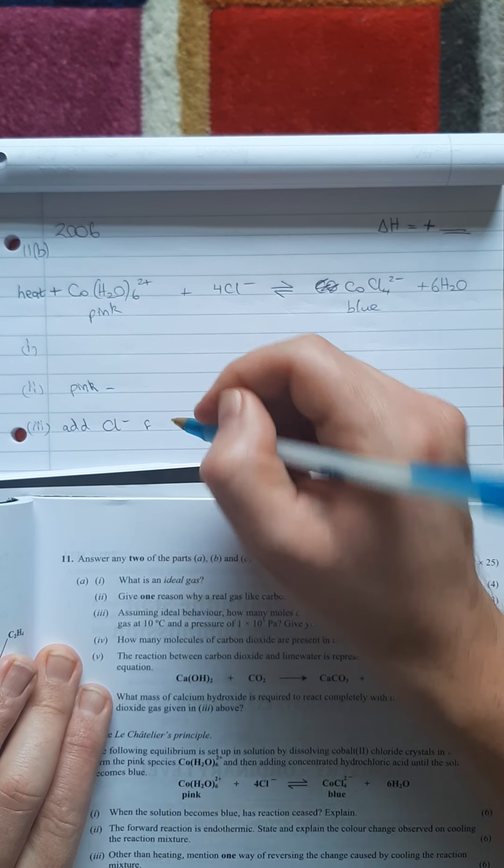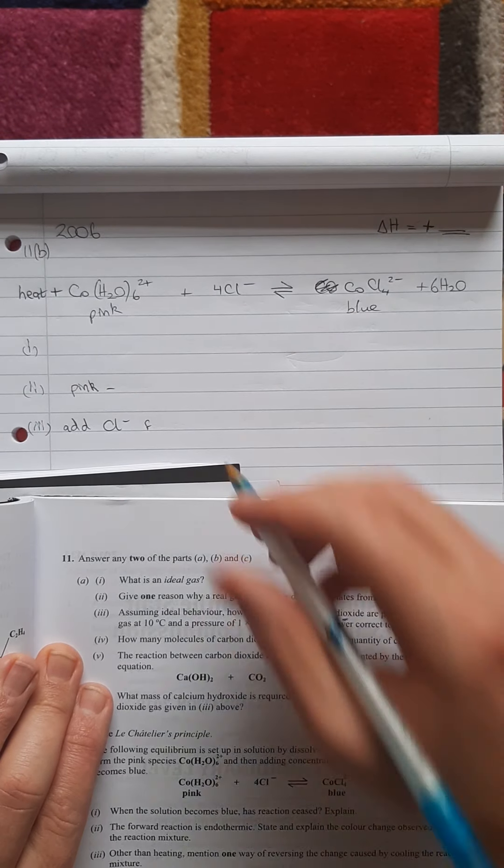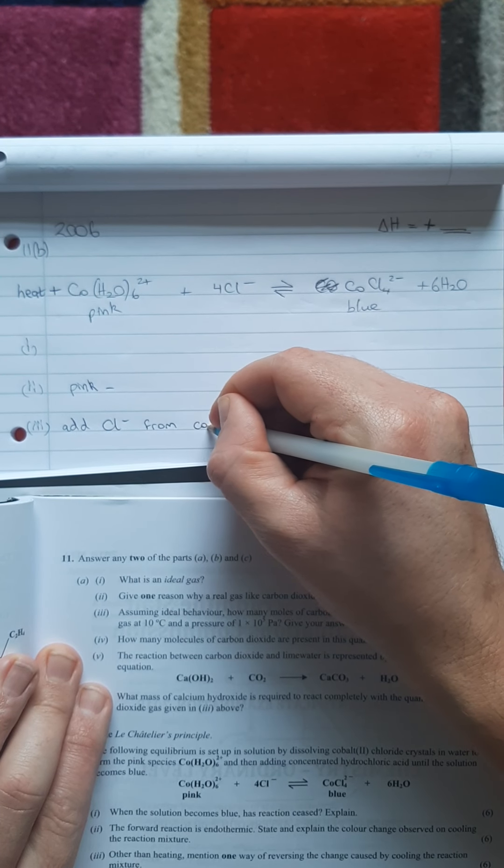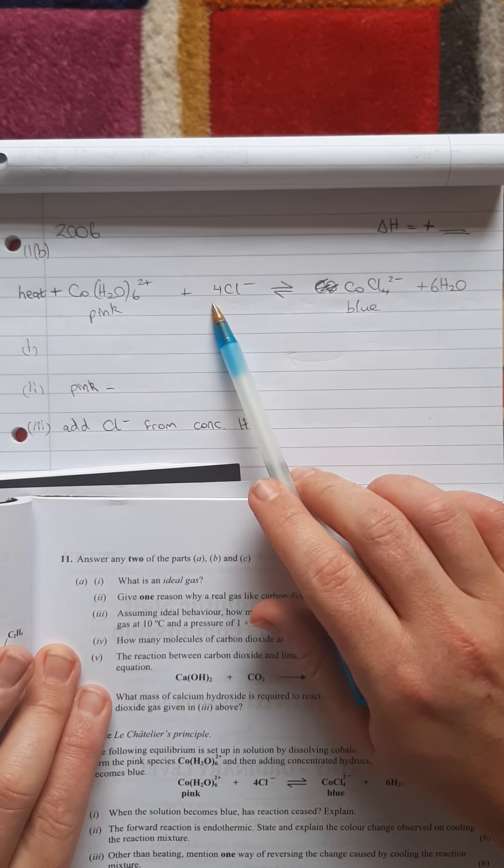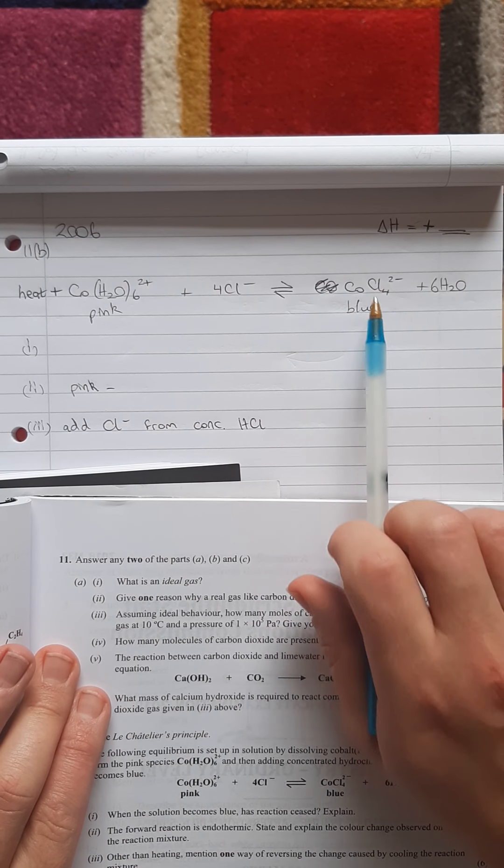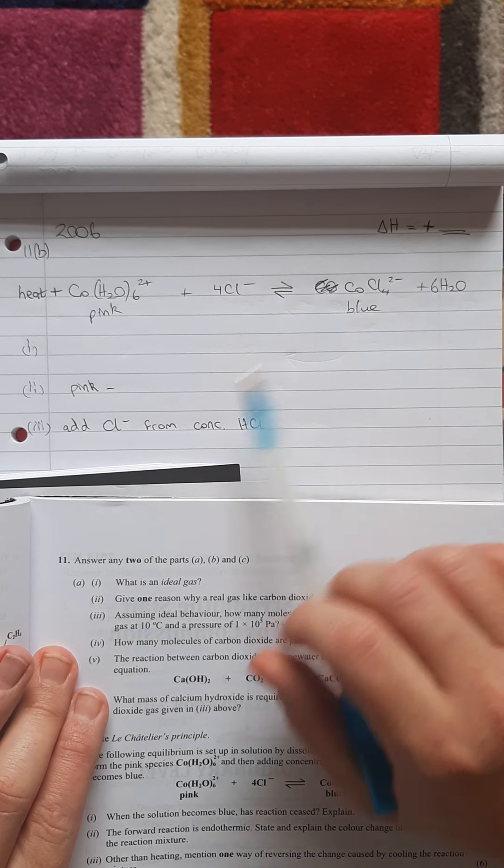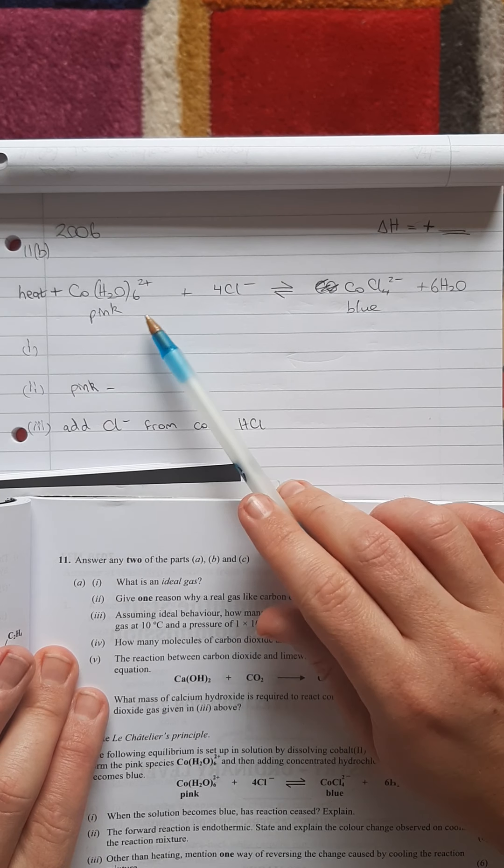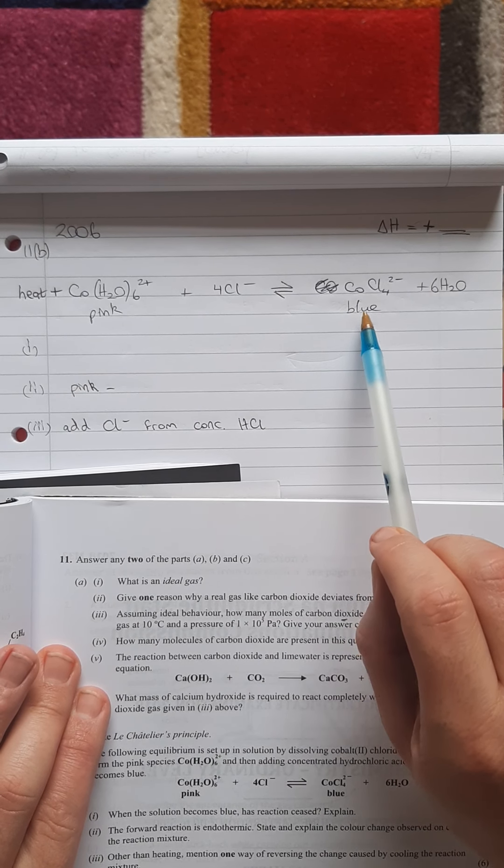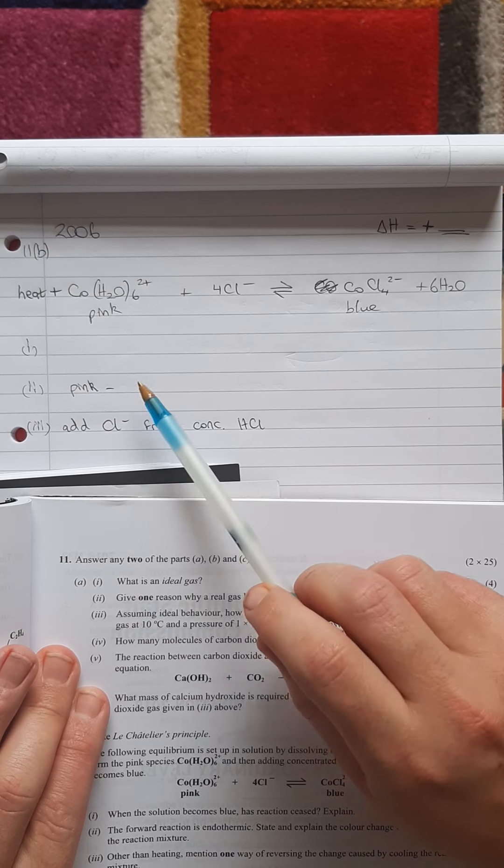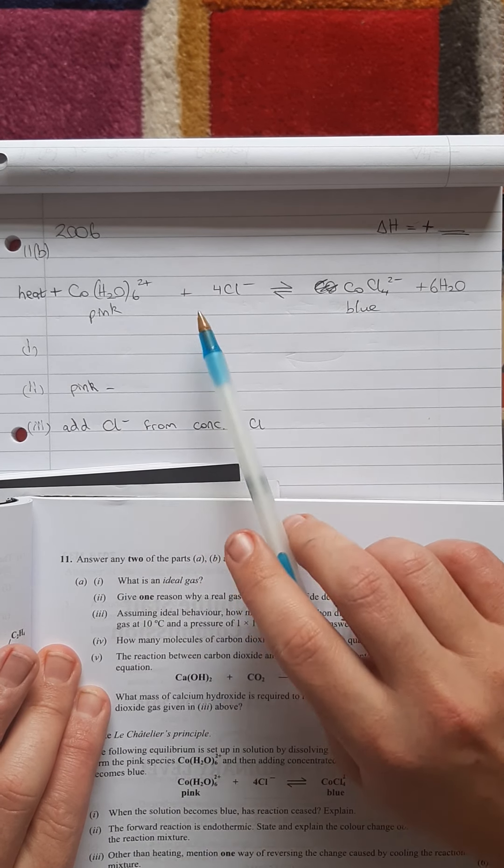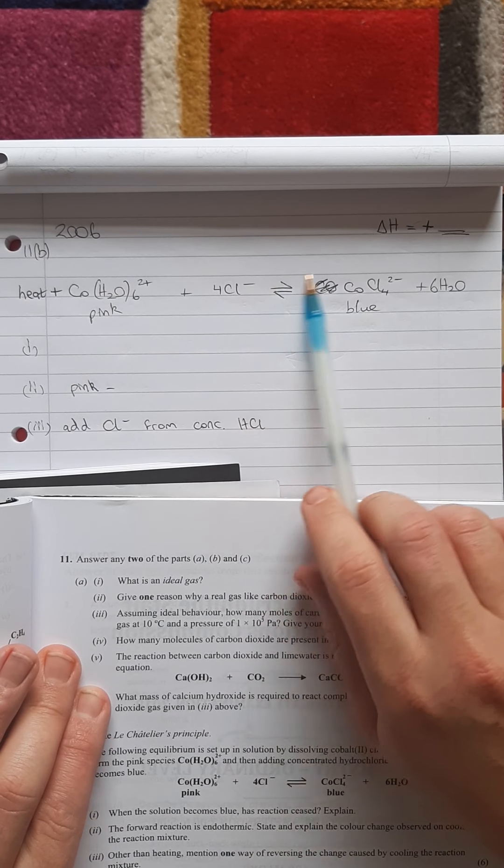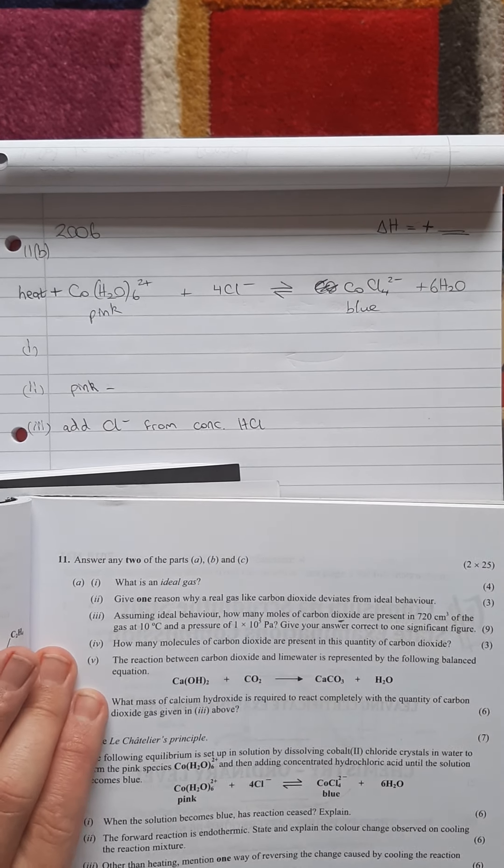How did we get the chloride ions in the first place? From concentrated hydrochloric acid. That will move the equilibrium over here to the right and it'll turn blue again. So that's probably the most straightforward way that you could reverse the change that you made in part two to make it go pink, and make it go blue again by pushing the equilibrium towards the forwards reaction.